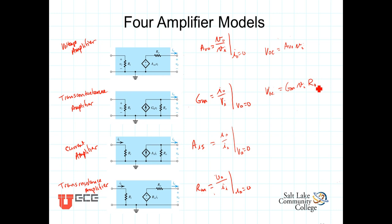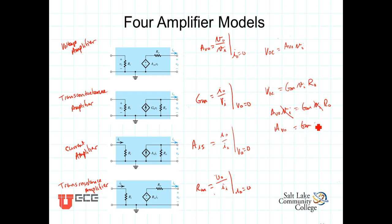Setting those two expressions equal to each other, we get AV0 times Vn equals G sub m times Vn times R0. The Vn terms cancel, and we get that AV0, the open-circuit voltage gain, is equal to G sub m times R0. You can go through and derive expressions relating any two of these models, because each of the four models is equivalent.